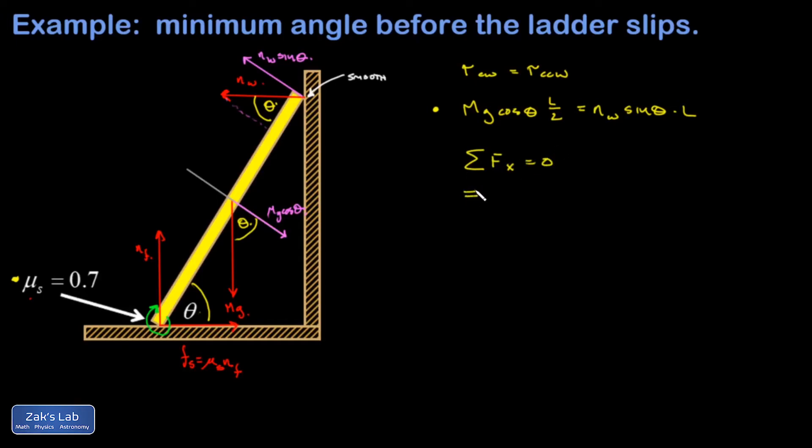So I'm going to use this condition of equilibrium: the sum of the forces in the x direction must be zero. That means everything pointing to the right must be equal to the sum of everything pointing to the left, and I look at all my rightward pointing stuff and there's my static friction force and there's nothing else pointing to the right.